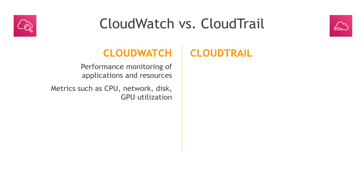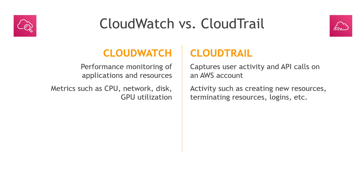CloudTrail is concerned with user activity and API calls at the AWS account level. So who is creating new resources, who's terminating them, who's logging in or creating new IAM users — that kind of thing.